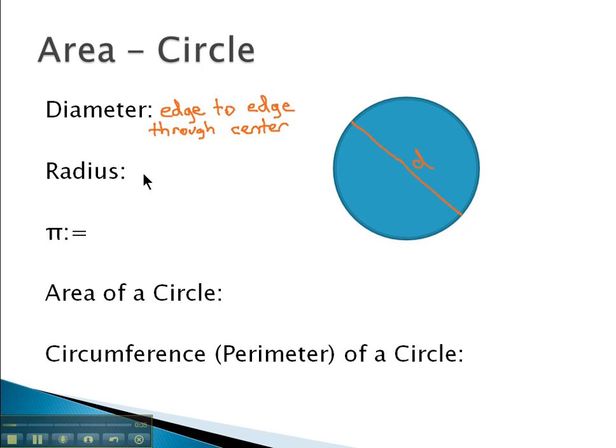The radius starts on the edge and just goes from the edge to the center, halfway through the circle. That's going to be a radius.